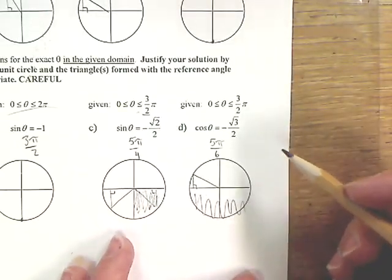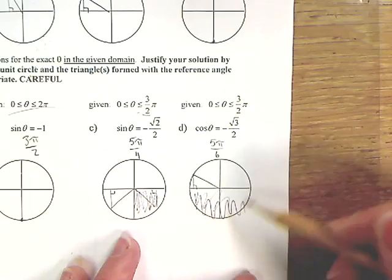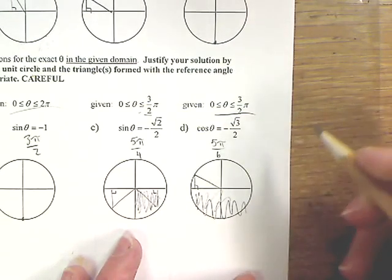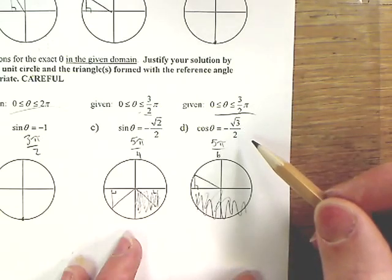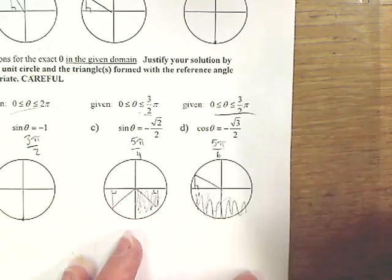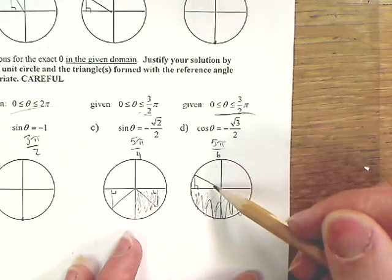And then last one here, we had to restrict ourselves all the way here because of the domain, and we found that negative √3 over 2 equaled 5π over 6.